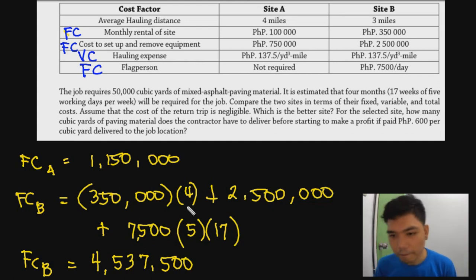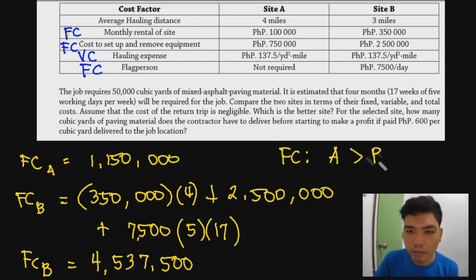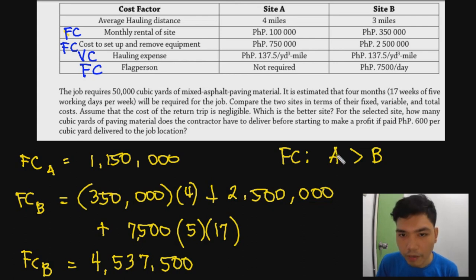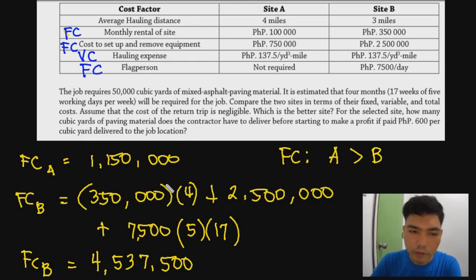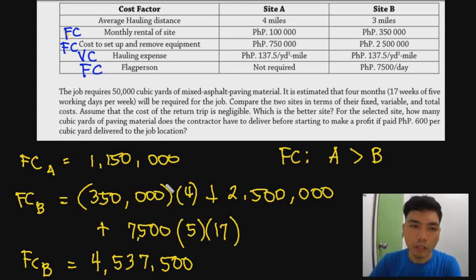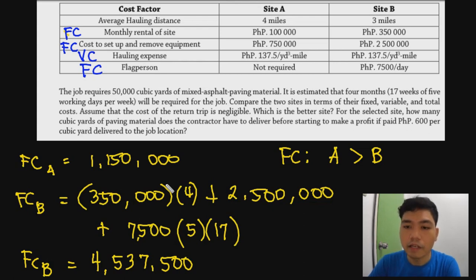Comparing on the basis of fixed costs only, Site A is the better choice because its fixed cost of 1,150,000 is much lower than Site B's 4,537,500. By the decision rule, when we can't consider total cost, we select the option with lower fixed cost, so Site A is preferred on fixed cost basis.